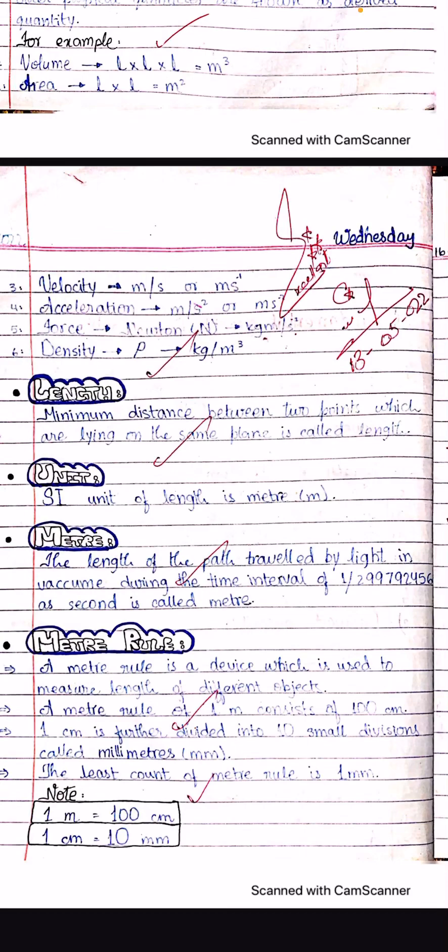The meter rule is divided into small divisions; there are ten small divisions called millimeters. Remember: one meter equals one hundred centimeters, and one centimeter equals ten millimeters. Using a meter rule you can measure up to the millimeter level — that is its least count.